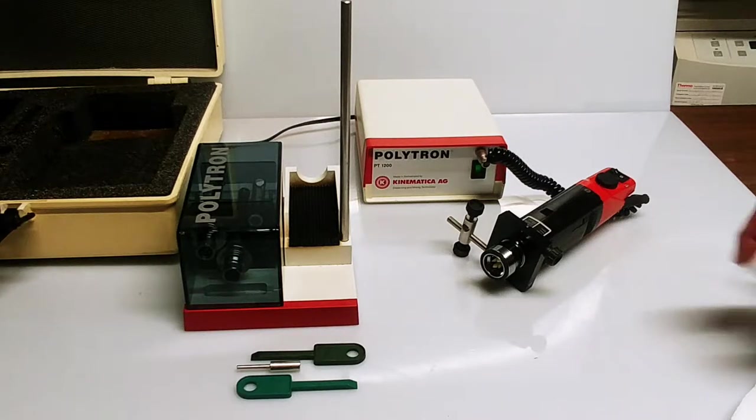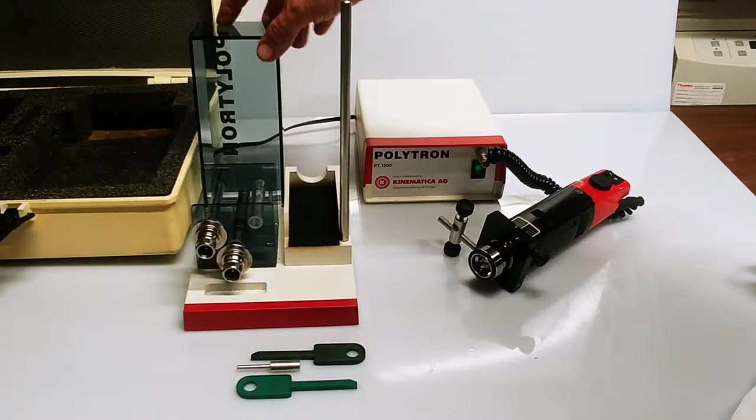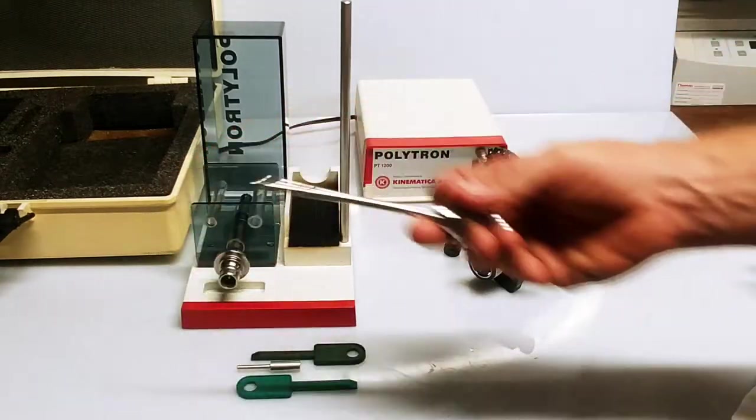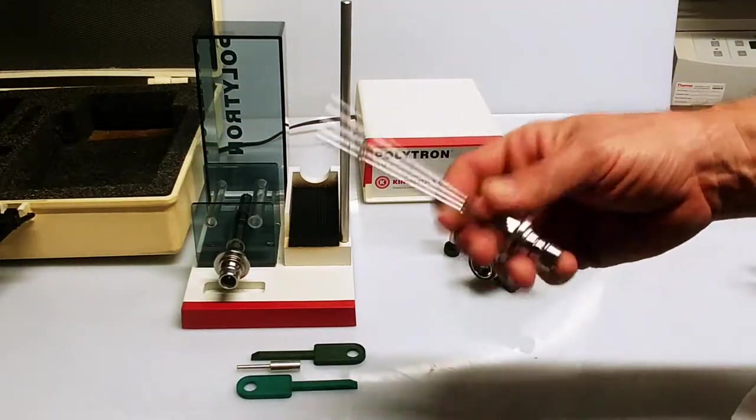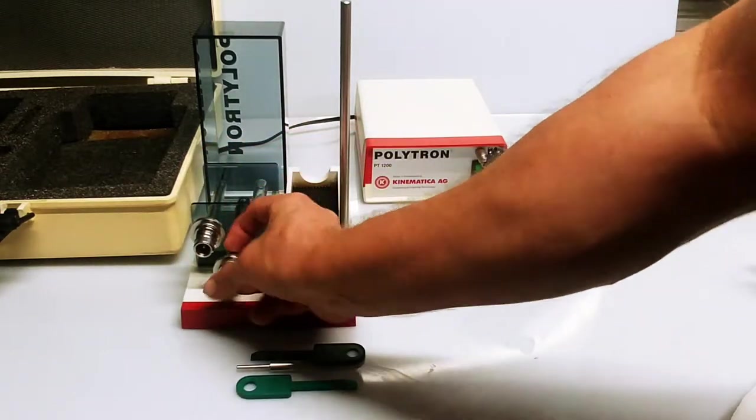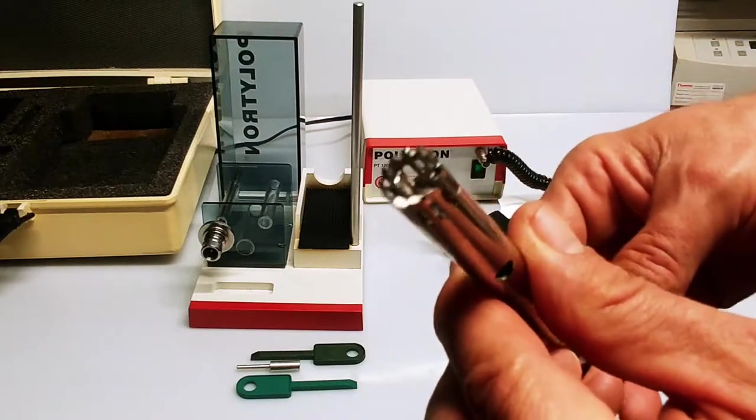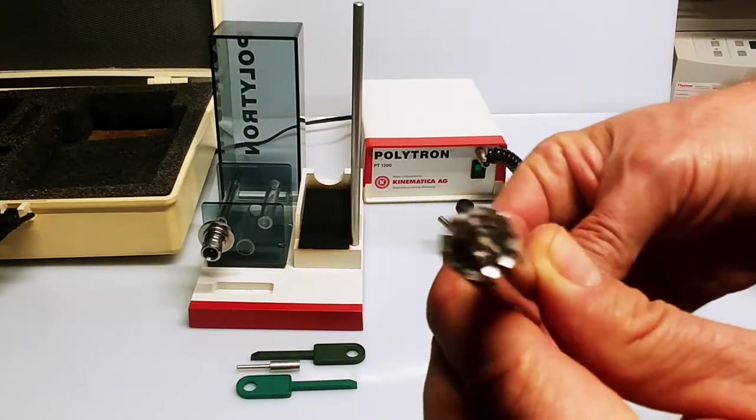This unit comes with the head, the mounting hardware, and in the case there are two heads: a much smaller diameter homogenizing head as well as a very coarse and aggressive head. If we take a look at that tip there, that's a very aggressive homogenizing head.